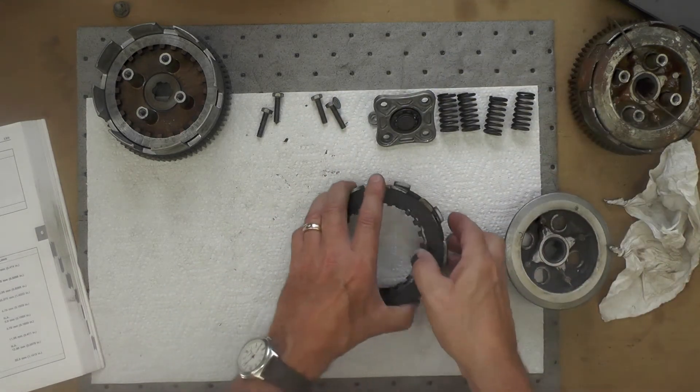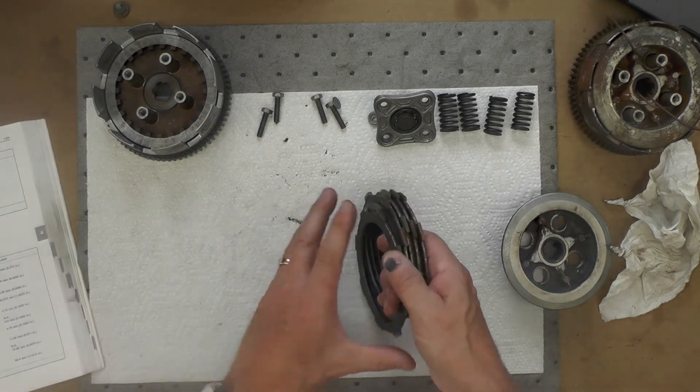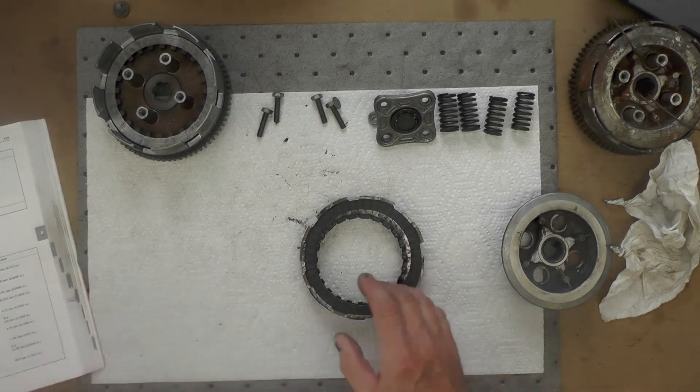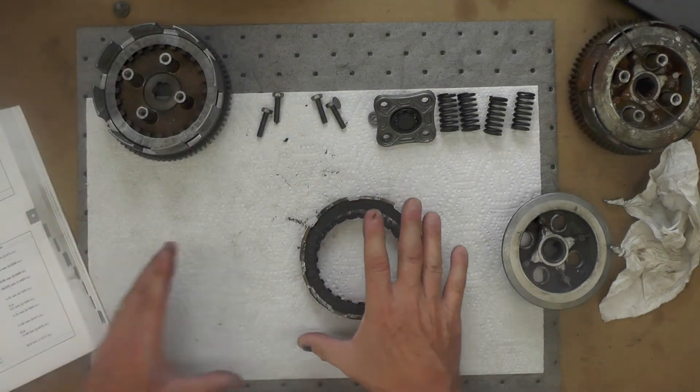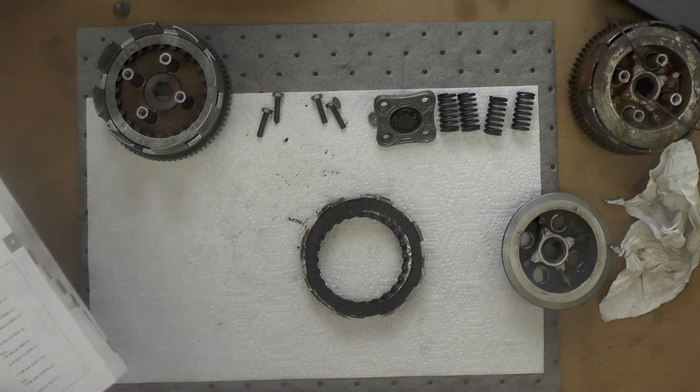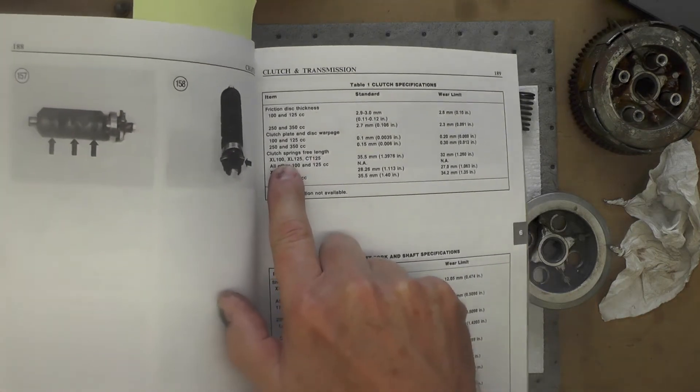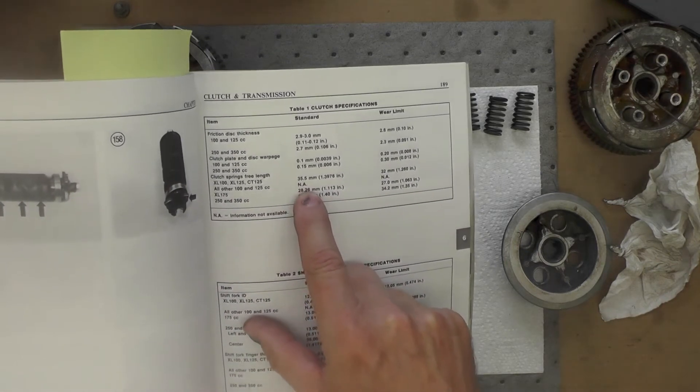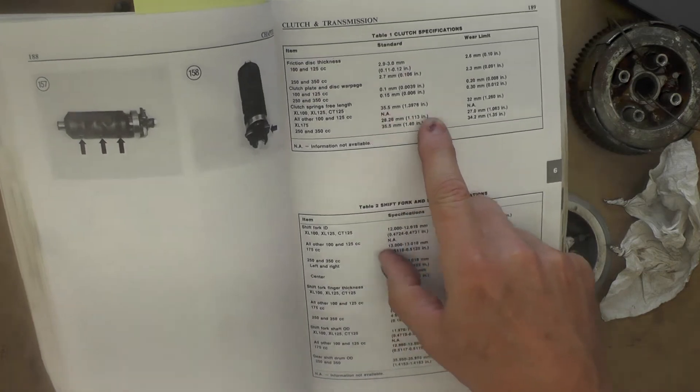Before I show you that process, in the Clymer Honda manual right here, under clutch specifications, it lists the friction disc - that's what these cork plates are called. The friction disc thickness is 2.9 to 3 millimeters. I think I said it was 2.9. I think the Honda service manual indicates 2.9, but the Clymer's is 2.9 to 3 millimeters. So I took a few of these, wiped them off, kept them in order. And you can see, let me zero out my caliper right there. And I'll show you, I'm just going to measure: 2.92, 2.9, 2.94.